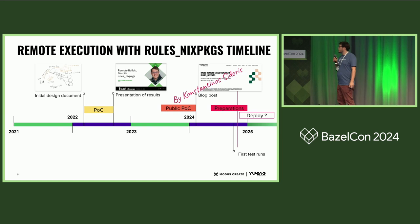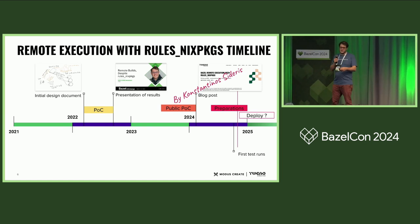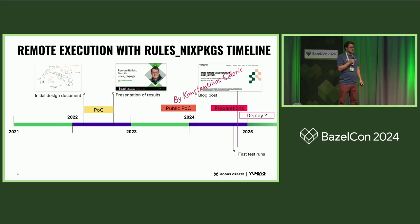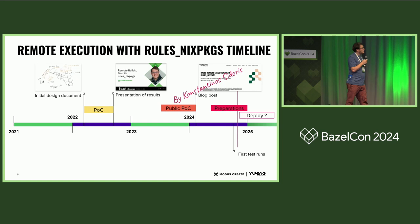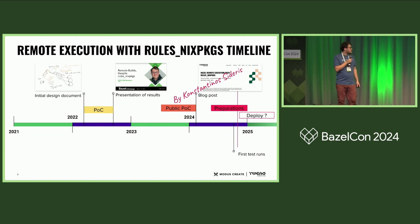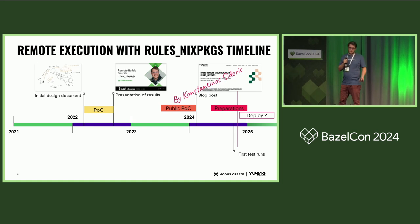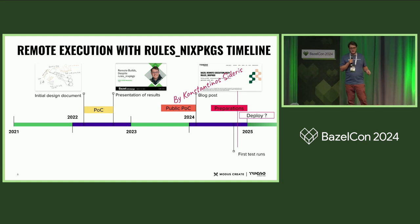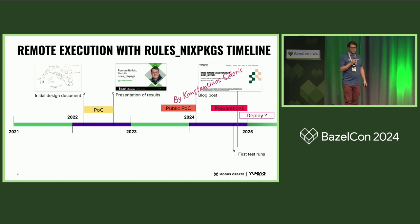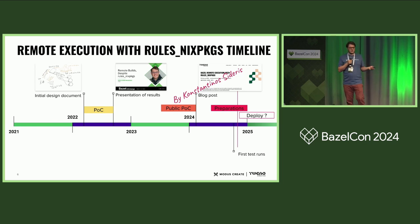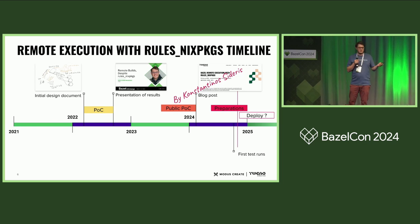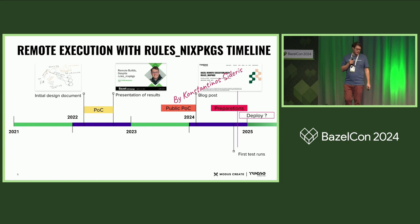I made a first proof of concept and a design document, then I presented the results at the Bazel Exchange. But we had to drop it at Intuitive because the build was not that stable. Remote execution was adding extra unstable features, and it would be the tree that hides the forest — people would be complaining that remote execution crashes everything, while there were still other underlying issues. It was not the right time yet.